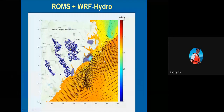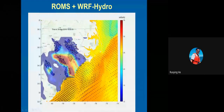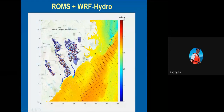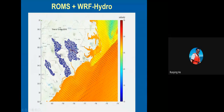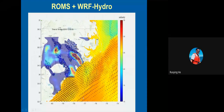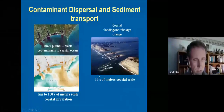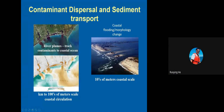With this system we are working on specific coastal processes: river plumes, contaminant dispersal using remote sensing and models to look at colored dissolved organic matter, and sediment transport and shoreline change using sediment transport models.